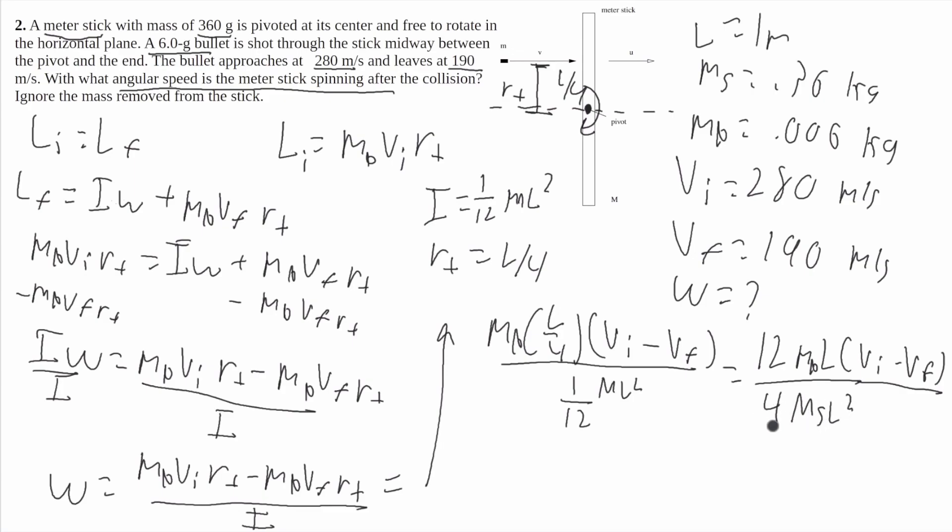Because it came from this i, which is dealing with the moment of inertia of the stick. And that there can be simplified to 3. So it'll be 3 mbl times v initial minus v final all over the mass of the stick l squared. And one of those l's will cancel with that. So we'll get 3 mb v initial minus v final all over the mass of the stick times the length. And that is the final answer.